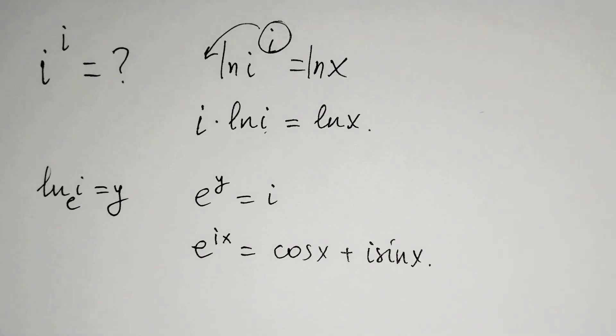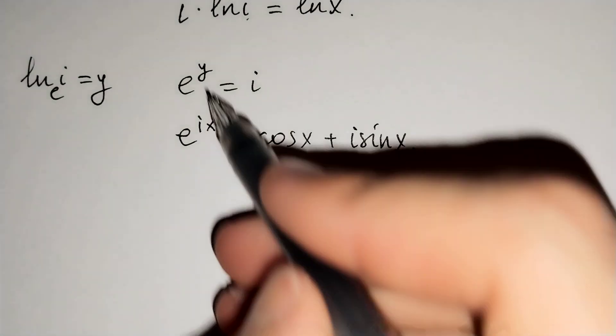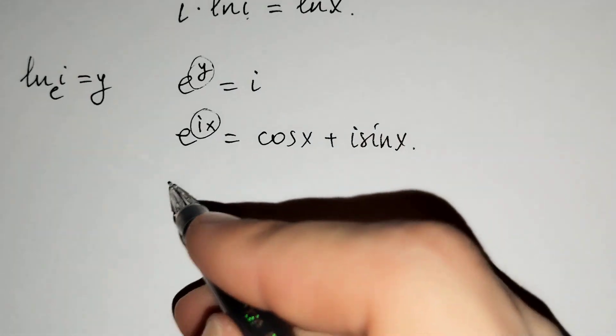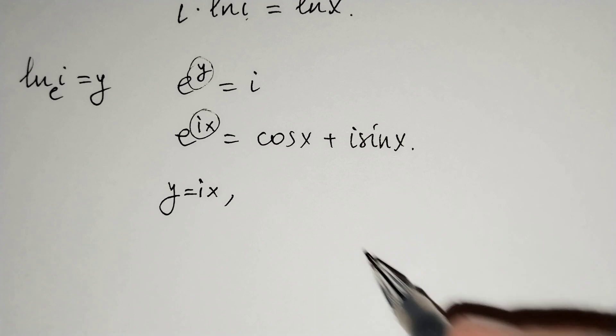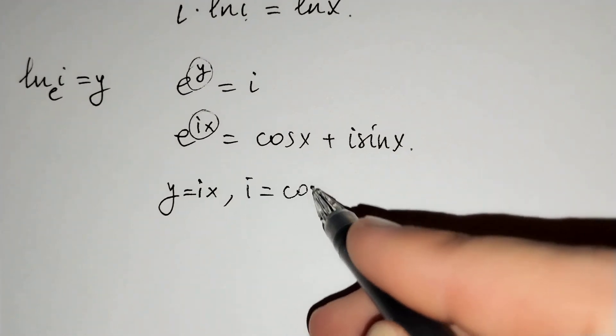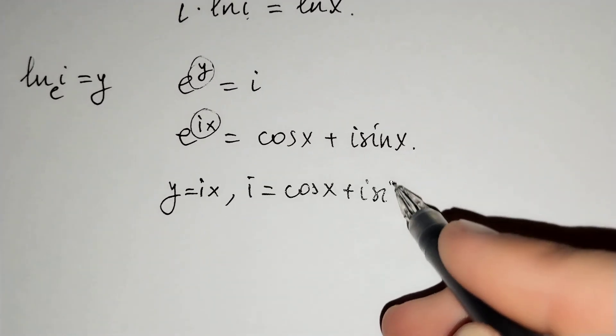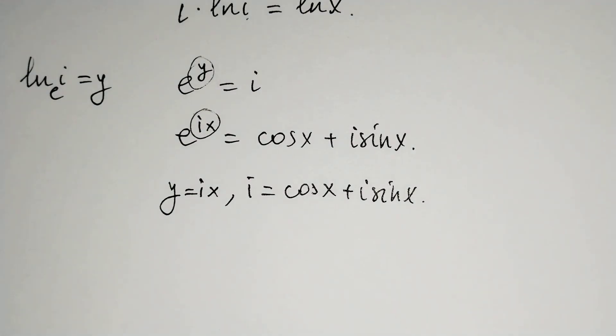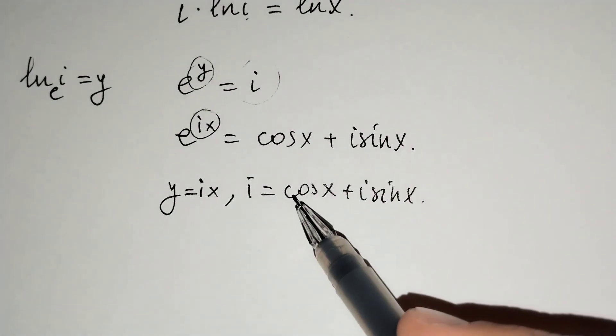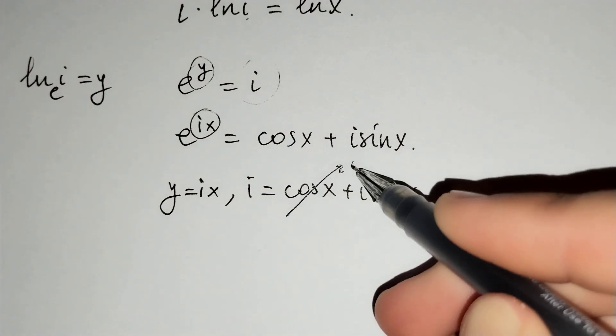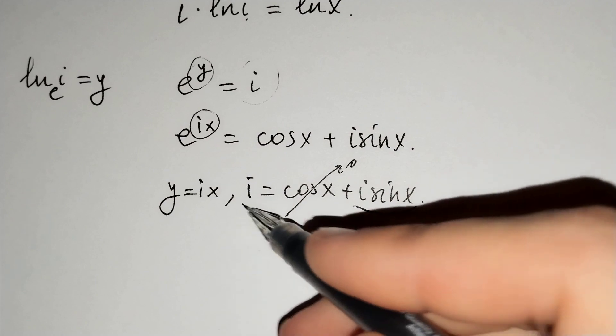If we compare these two equations, y equals ix from the left side and i equals cosine x plus i sine x from the right side. The first equation has no real part, so cosine x should equal zero and i sine x should equal i.